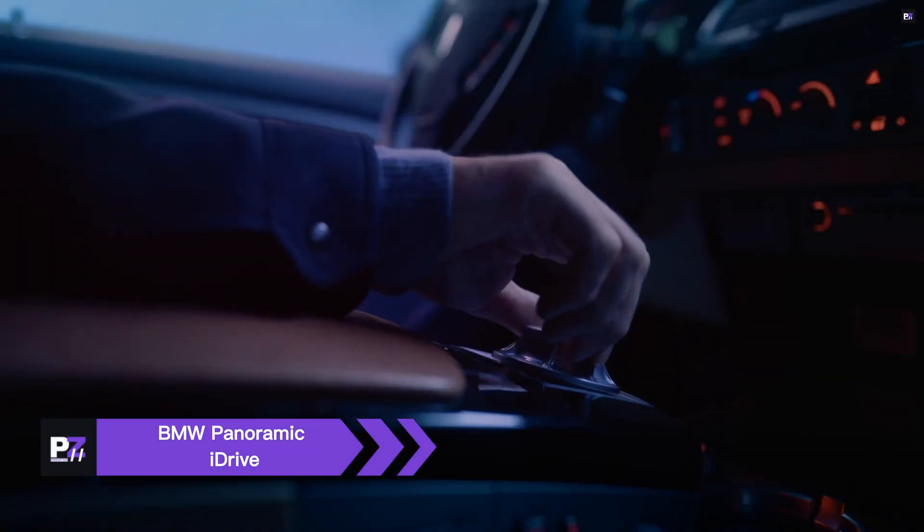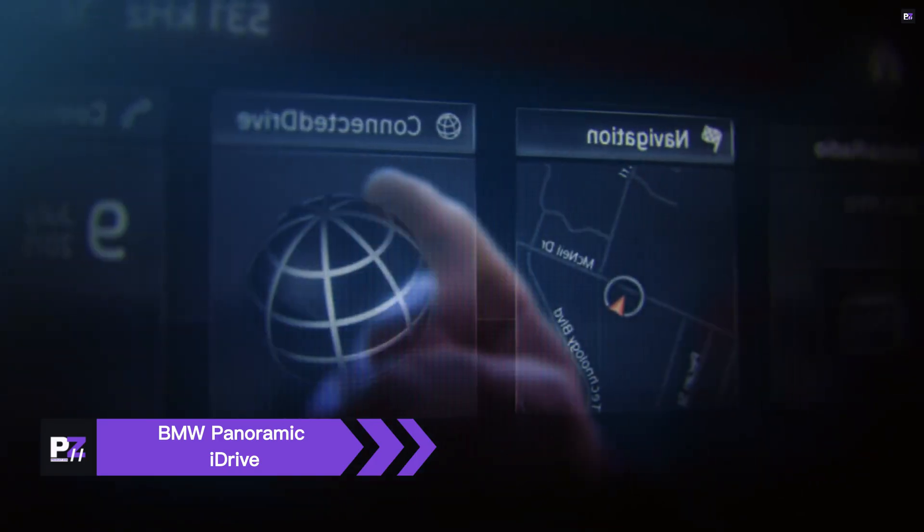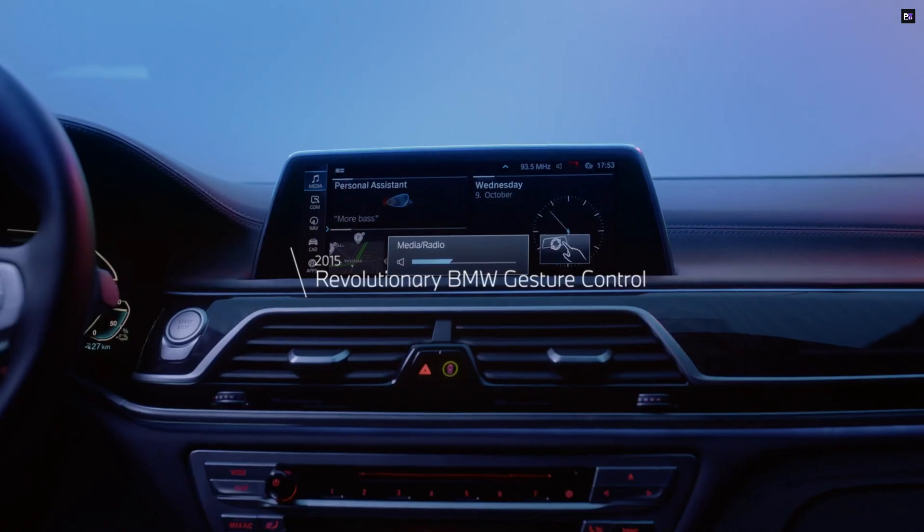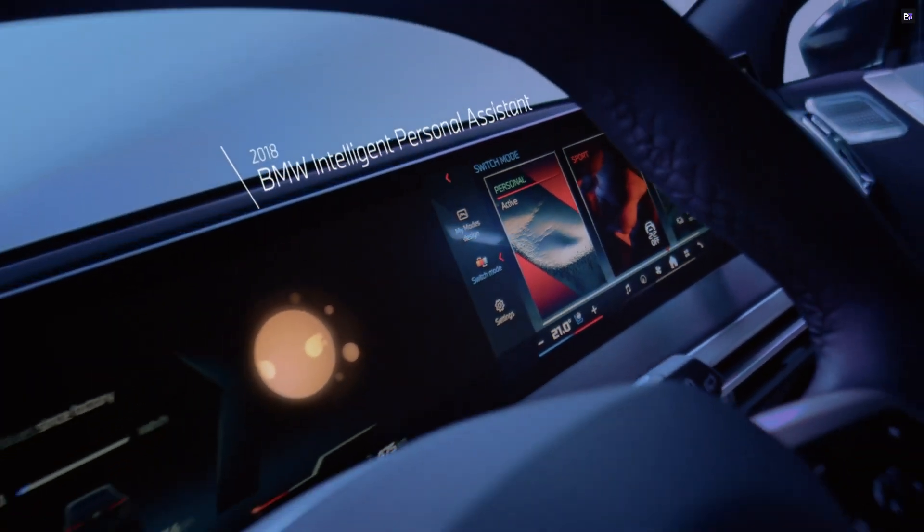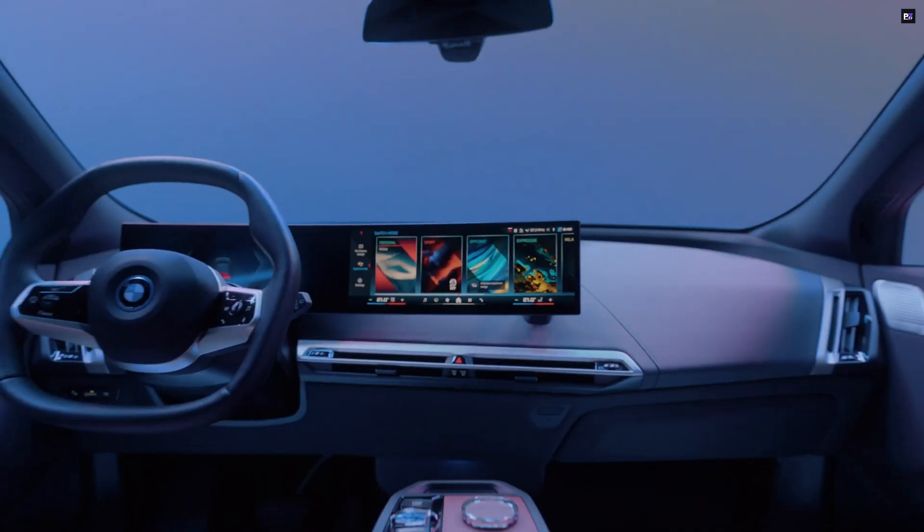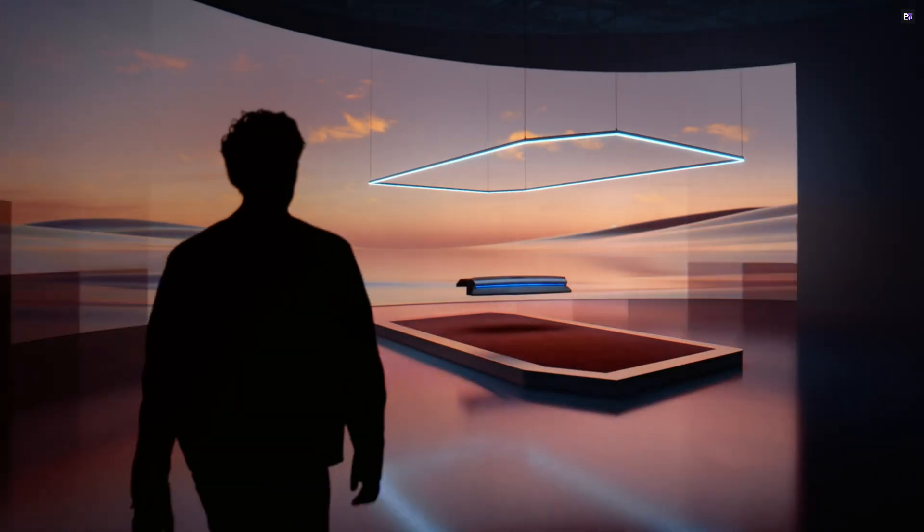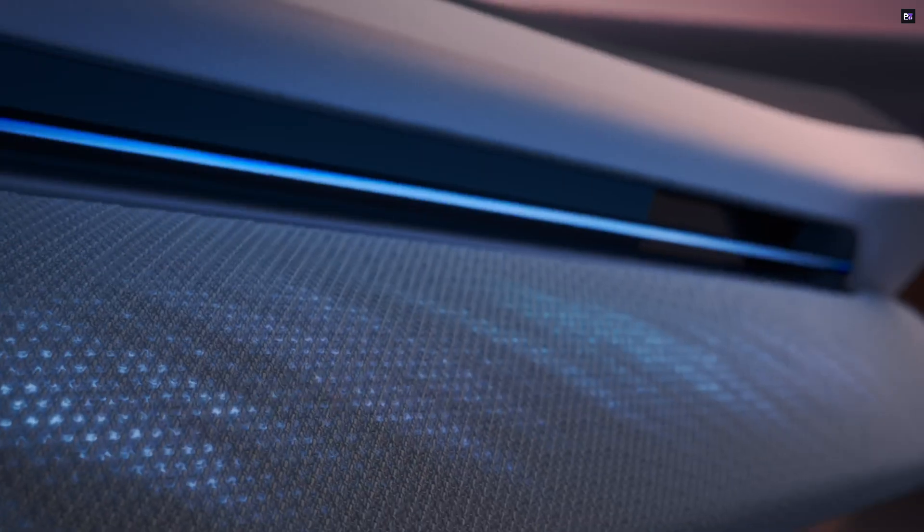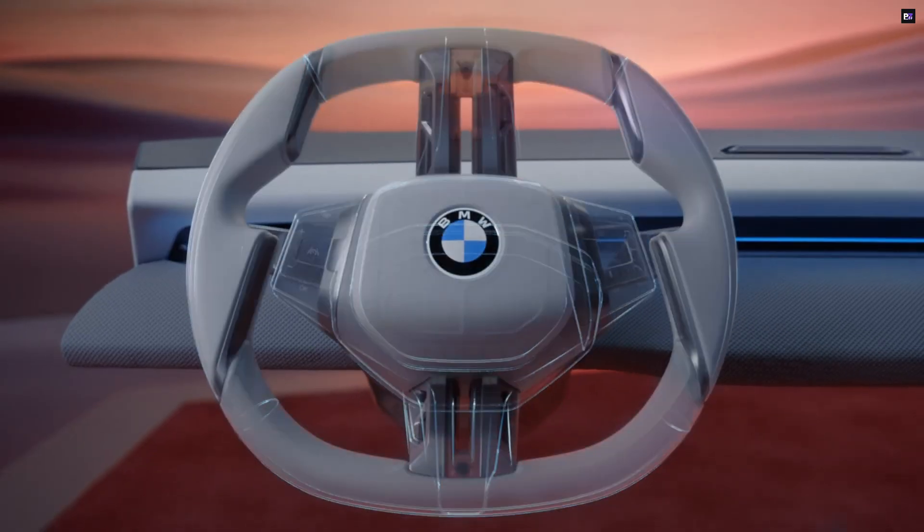BMW's panoramic iDrive redefines the in-car display experience. Central to the system is the panoramic vision system, an expansive head-up display projected across the lower windshield. This innovative design presents essential data such as speed, navigation, and media within the driver's direct field of view, significantly enhancing both safety and convenience. The interface is highly flexible, offering six customizable sections to tailor information to individual preferences.